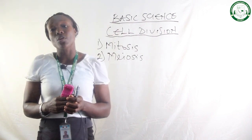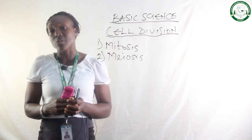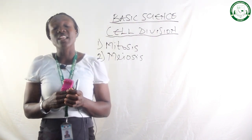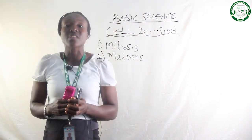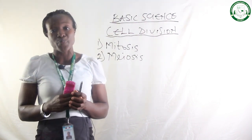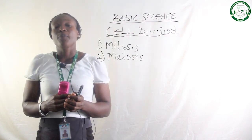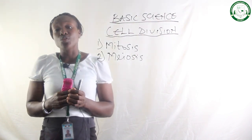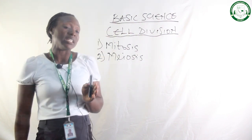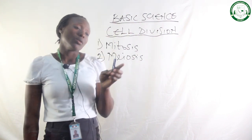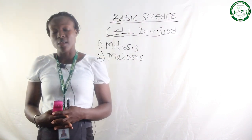At the end of mitotic division, two daughter cells are formed. The two daughter cells that are formed have the same number of chromosomes as the parent cell, showing that they are genetically identical with the parent cell.